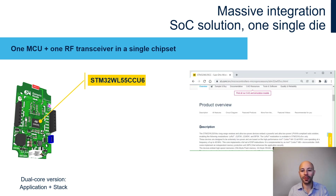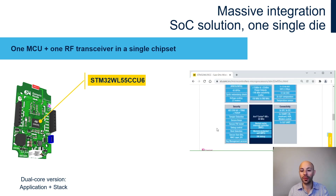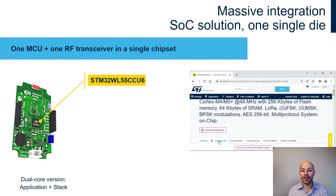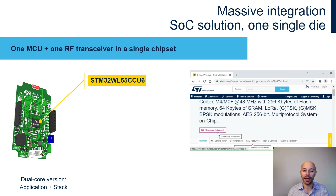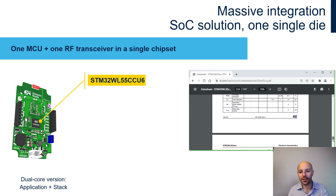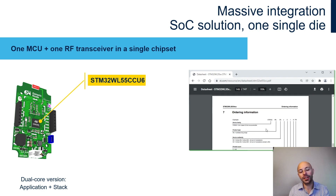On that web page we will find the description, the block diagram, samples availability, how to order samples, documentation, CAD resources, tools and software, and quality and reliability. All this material is available on that page, and we can also download the datasheet. In the datasheet, if we go to Section 7 — the ordering information — we can understand in detail the meaning of each digit of the part number.